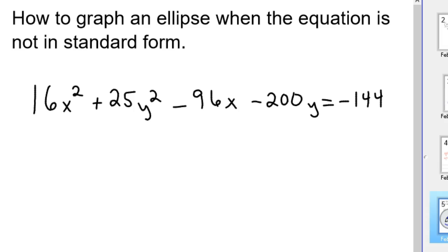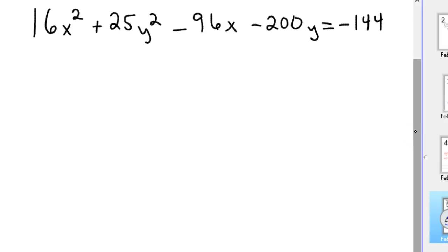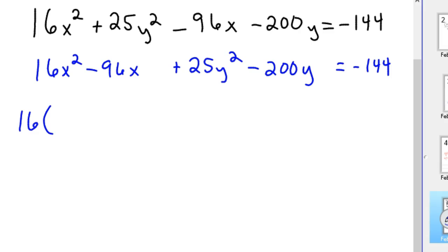So to do this you complete the square to put it in standard form. So to start with, we're going to get our x's together. So 16x² + 25y² - 96x - 200y = -144. Then we're going to factor out a 16 out of the first two, out of the first group.